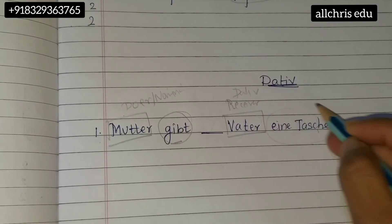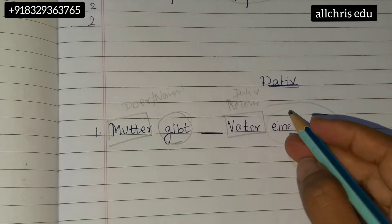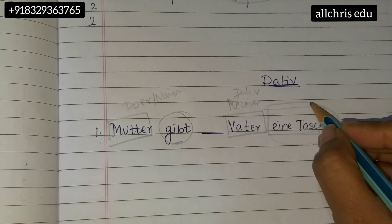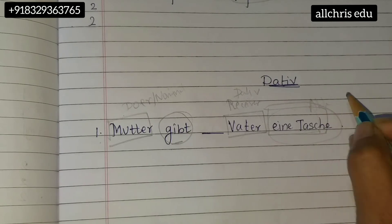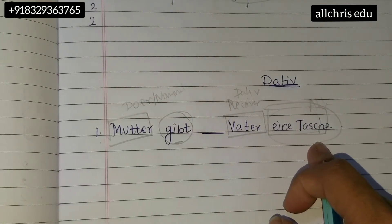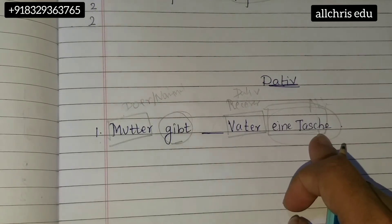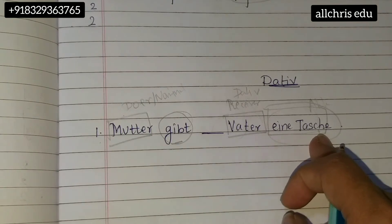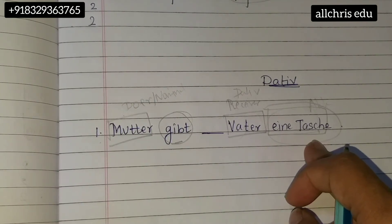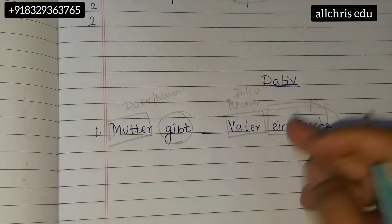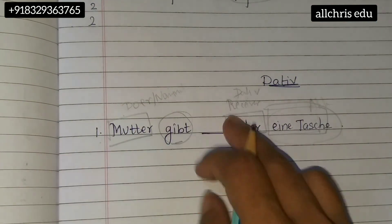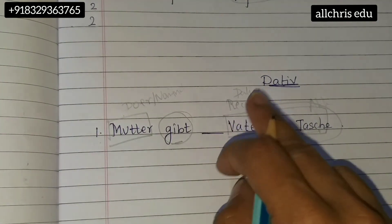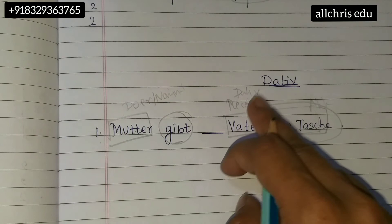And then what is Tasche? It always comes with an article. So Tasche is accusative. Why? Because Tasche is not the doer — it's not giving anybody anything, so it's not nominative. Tasche is not the receiver — it's not receiving father or mother — so it cannot be dative. Tasche is accusative because we are taking the bag and giving it to father. This is the direct object; father is the indirect object.